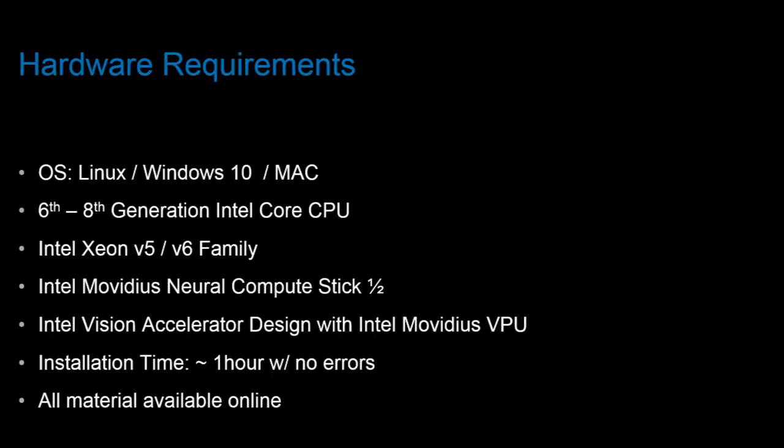Here's a look at the recommended hardware requirements for running OpenVINO. The suggested operating systems are Ubuntu 16.04 Linux, Windows 10, and Mac. Sixth through eighth generation Intel Core processors are recommended, but you could also get away with earlier generation processors depending on the type of model being run and your patience around compile and execution times. Xeon v5 and v6 families of processors are also recommended, and naturally the Movidius Neural Compute Stick and VPUs are recommended, particularly if your processor may be dated.